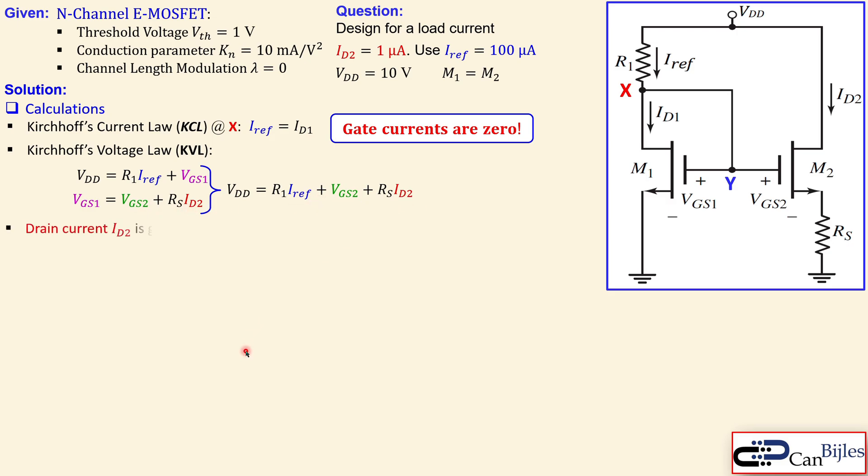Now we have our expression for the VDD. The drain current ID2 is given by this expression, assuming of course saturation region for operation. And now we see here the Kn and the VGS2 and also the threshold voltage.